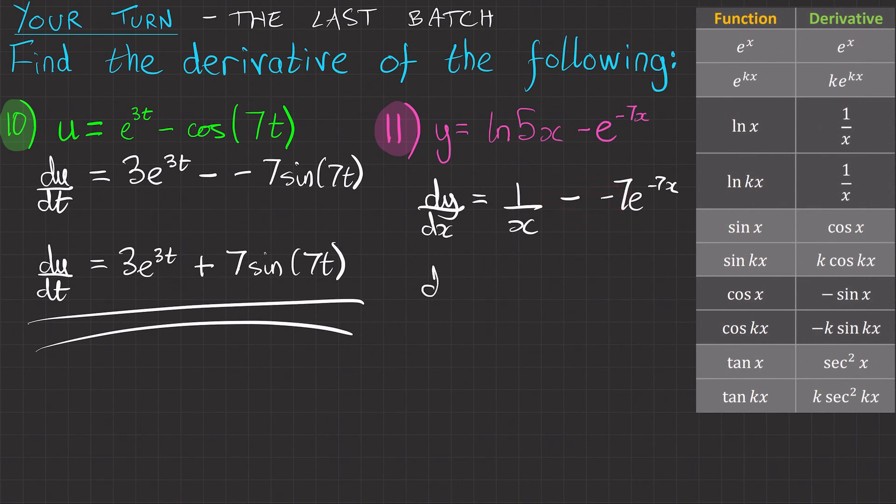that becomes a plus. So dy/dx equals 1 over x plus 7e to the minus 7x. There's a final answer.